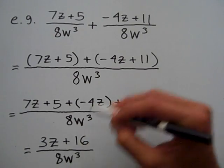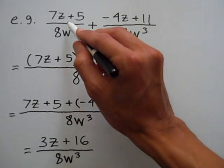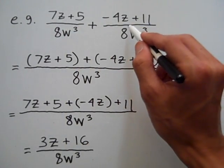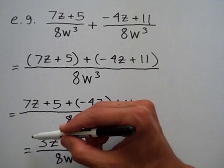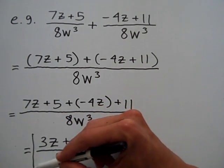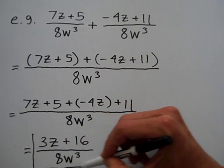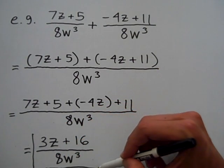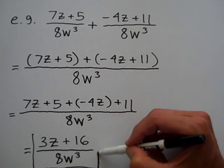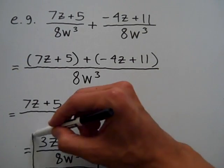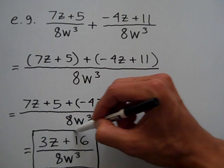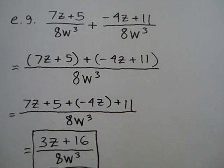So the sum of these two algebraic fractions would be 3z plus 16 over 8w cubed. That's an example of adding algebraic fractions. Now suppose I want to subtract algebraic fractions that have the same denominators.